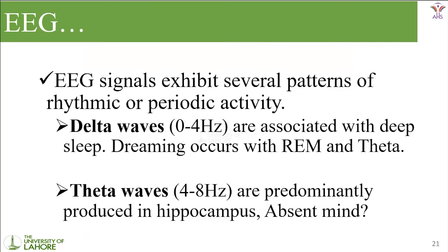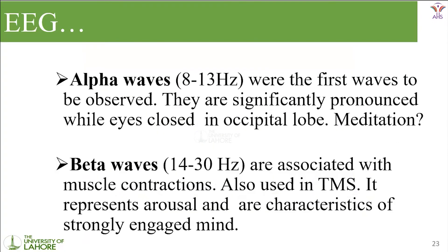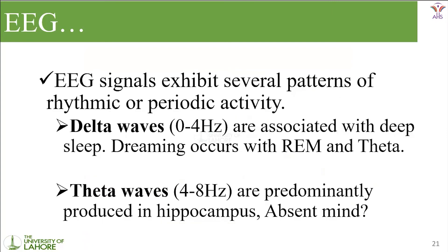EEG signals exhibit several patterns of rhythmic or periodic activity. It consists of delta waves, theta waves, alpha waves, beta waves, and gamma waves. Delta waves have a frequency of 0 to 4 Hz and are associated with deep sleep and dreaming. When a person is sleeping soundly and having dreams, we will get delta waveforms on EEG, and it may also contain theta waveforms.